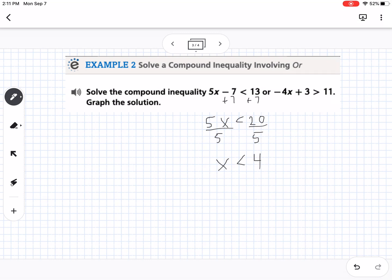Then we're going to do the same thing over here. So we're going to subtract three on both sides. So that gives us negative four x is greater than eight. Then we're going to divide by negative four. And remember what happens when we divide by a negative. We flip the inequality. So this is going to be x is less than negative two.